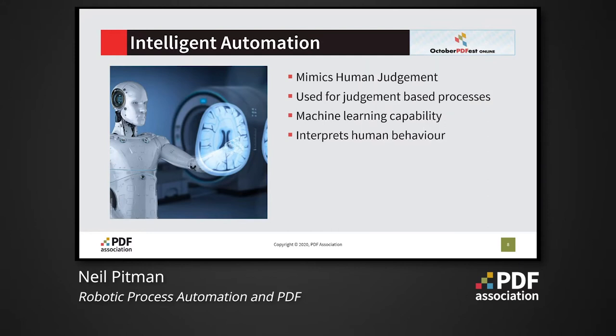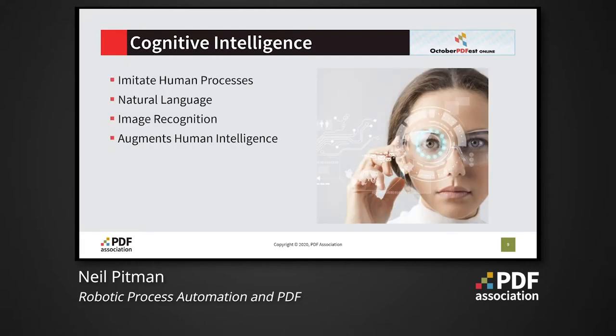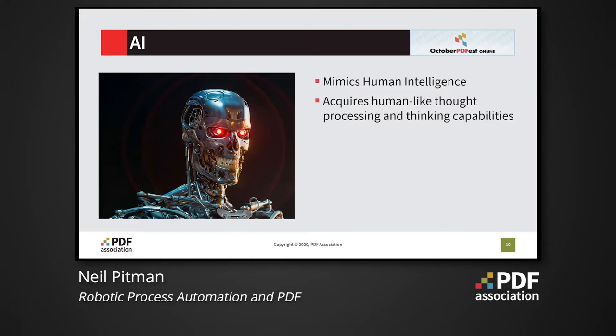By contrast, intelligent automation is based on machine learning — it's smarter and can incorporate judgments such as viewing and interpreting an MRI scan. Furthermore, cognitive intelligence can imitate human processes by combining natural language processing and image recognition to augment human intelligence, rather like an intelligent assistant. True artificial intelligence can mimic not just human actions but human intelligence, and ultimately an AI entity may become indistinguishable from a human being or even superior to one.